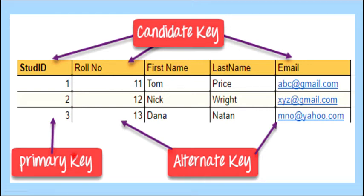The properties of the primary key: it should have a non-null value for each instance of the entity — it should not be kept blank. The value must be unique and should not be repeated. Also, the value must not change or become null during the life of each entity.